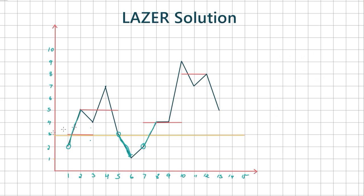When the sweep line moves to y equal to 3, we can see that a query line coincides with it. First we check if any line segments start at the sweep line — one does, so we insert it. Then we calculate the answer for this red line. Currently only one of the inserted light blue lines intersects this red line, so the answer is 1. Then we delete all line segments which end at this sweep line.